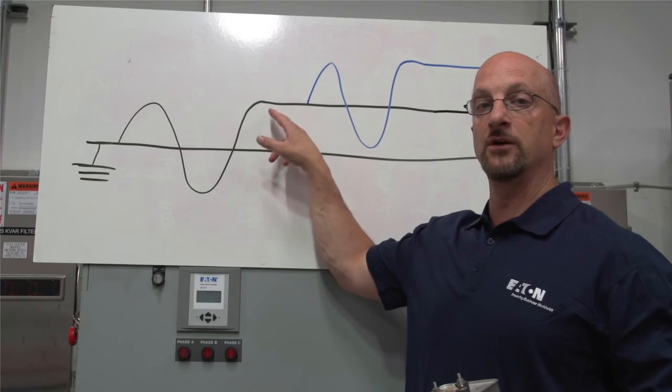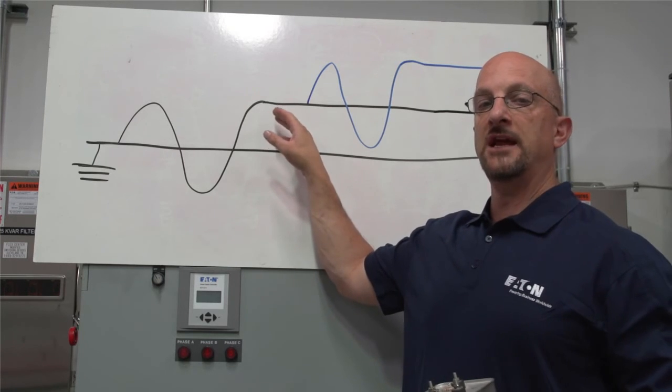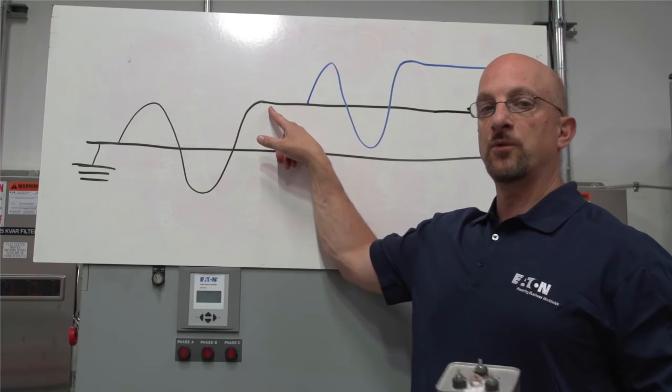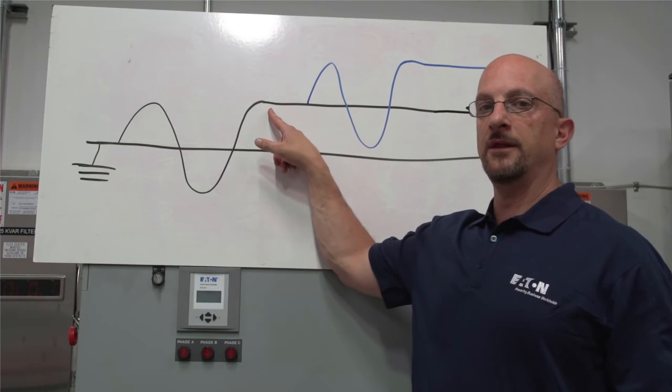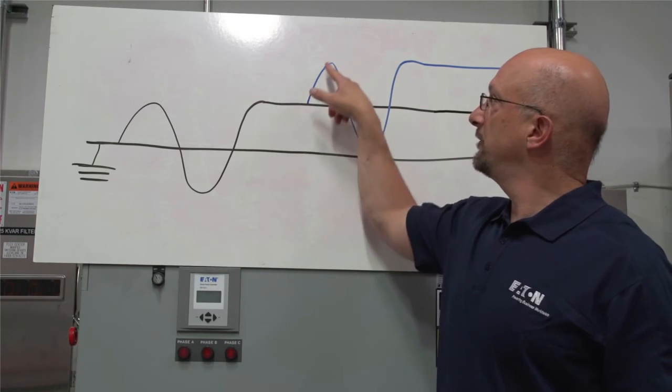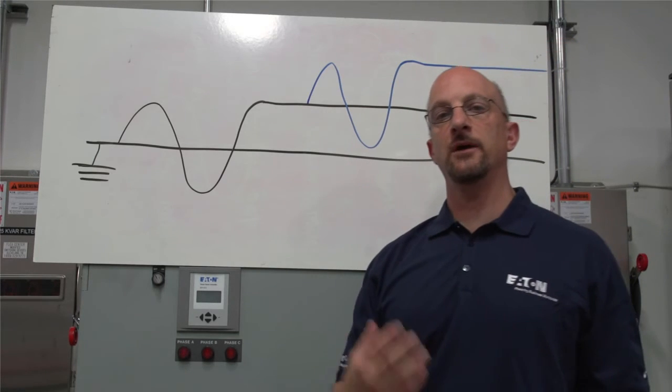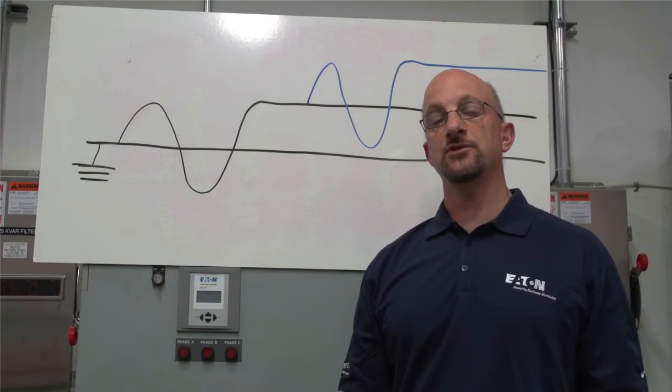We have a DC trap charge in the power system. But the problem is if there's an arcing ground, the next time the ground fault occurs, we could be up here. And the next time it occurs, it could be higher. So we have this higher and higher DC trap charge.